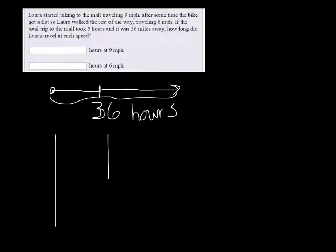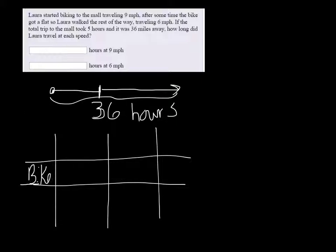So let's draw our table. This is bike, walk. And we know that r times t equals d. So when she was biking her rate was nine miles per hour. But when she started walking it went down to six miles per hour.